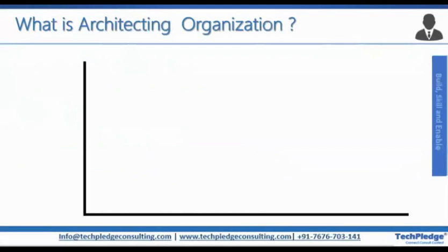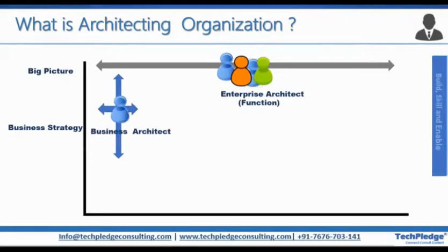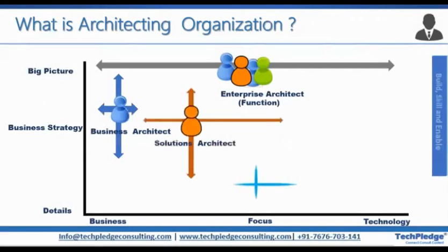Before we move to the details of the solution architect role, let's understand all the roles an organization has. As you can see on the top of the screen, it says 'big picture' — the business goals — which are led by the C-level enterprise architects, like the CEO or CTO. To translate these goals into reality, they need a business strategy, and this is done by the business architect. The business architect is focused on business and needs a team to achieve that focus.